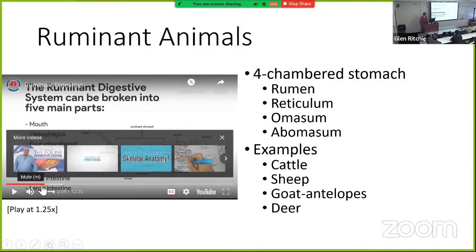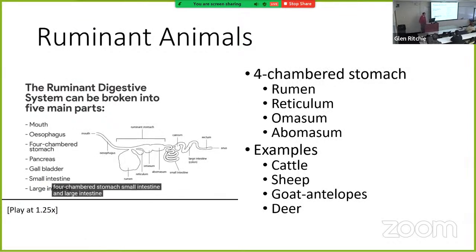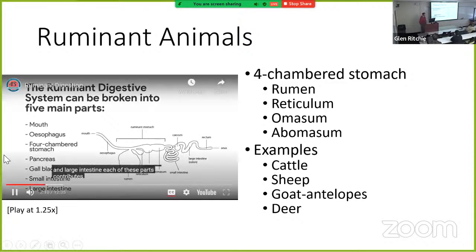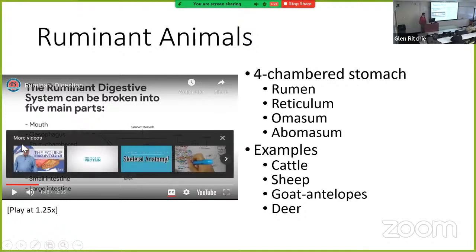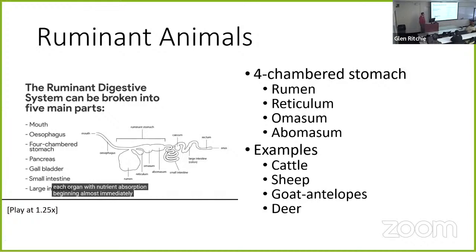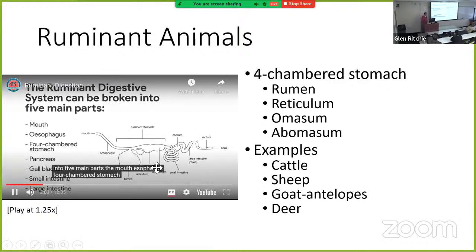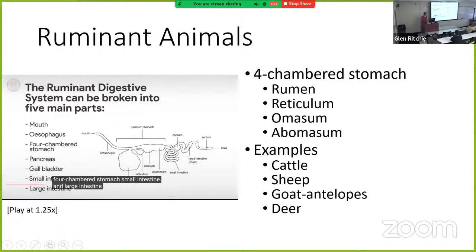The ruminant diet consists of forages and roughage. Digestion reduces nutrients in food to simple materials for easy absorption — these are used for energy and building tissues. The ruminant digestive system can be broken into five main parts: the mouth, esophagus, four-chambered stomach, small intestine, and large intestine.